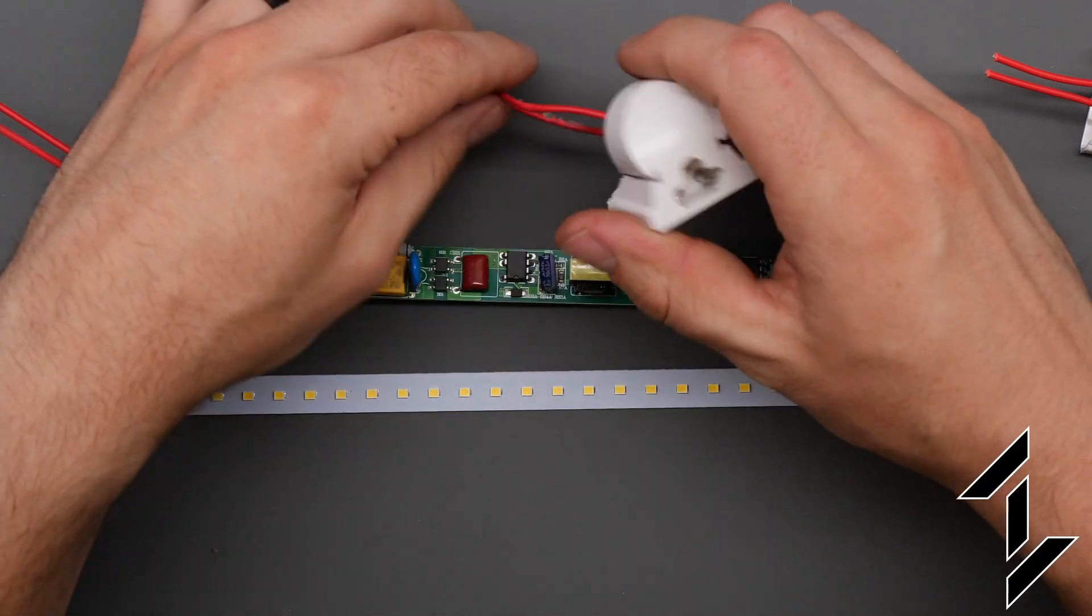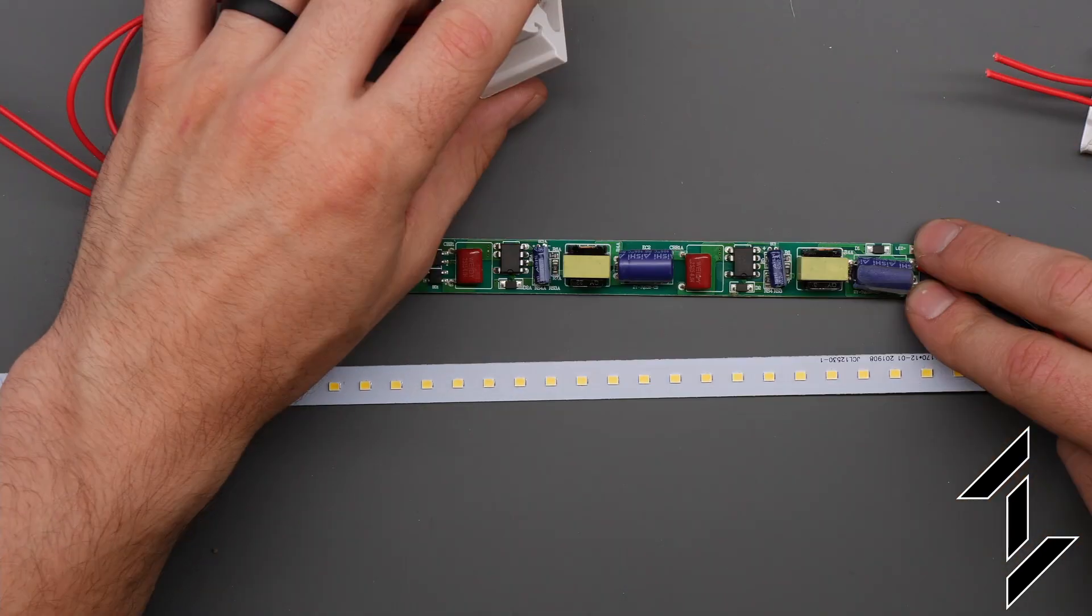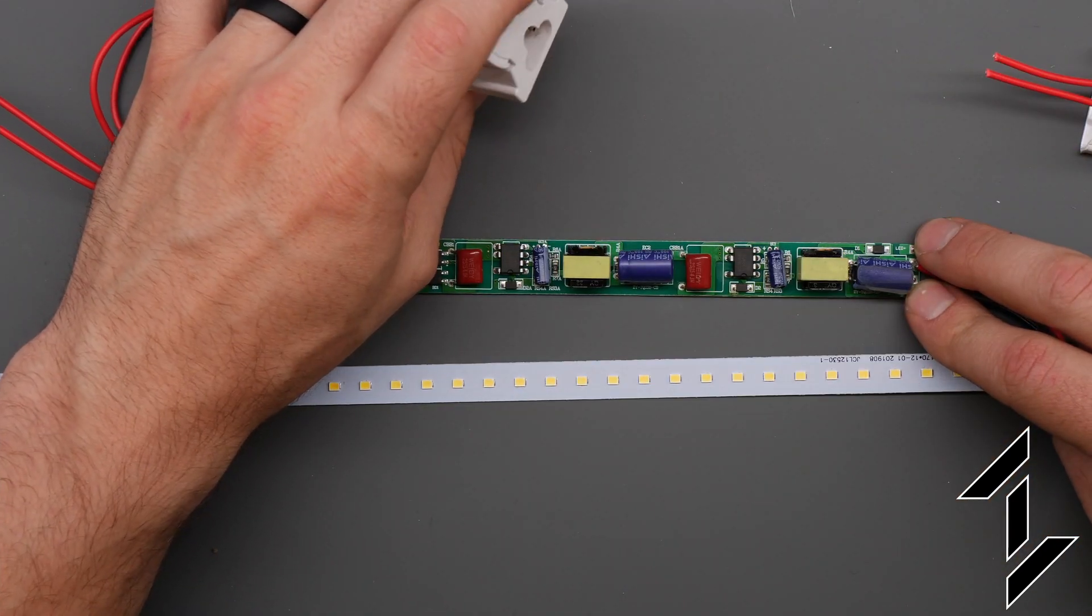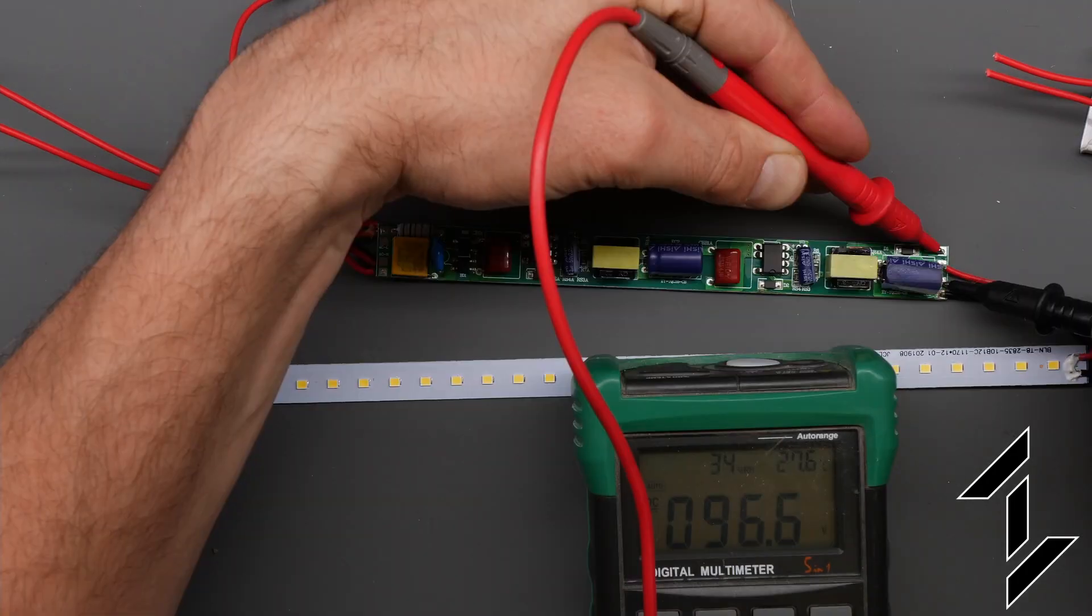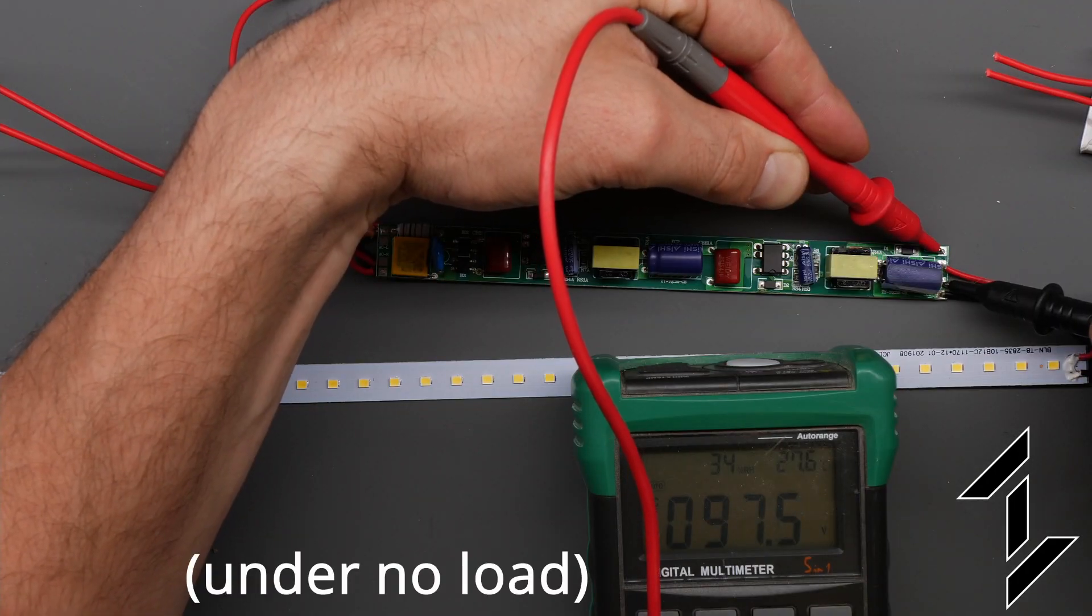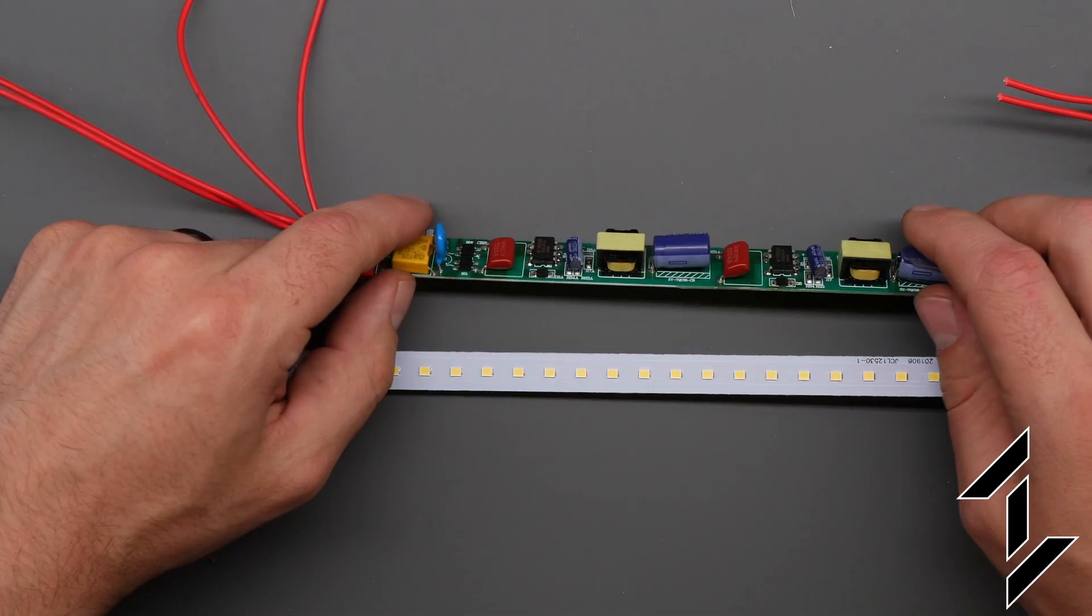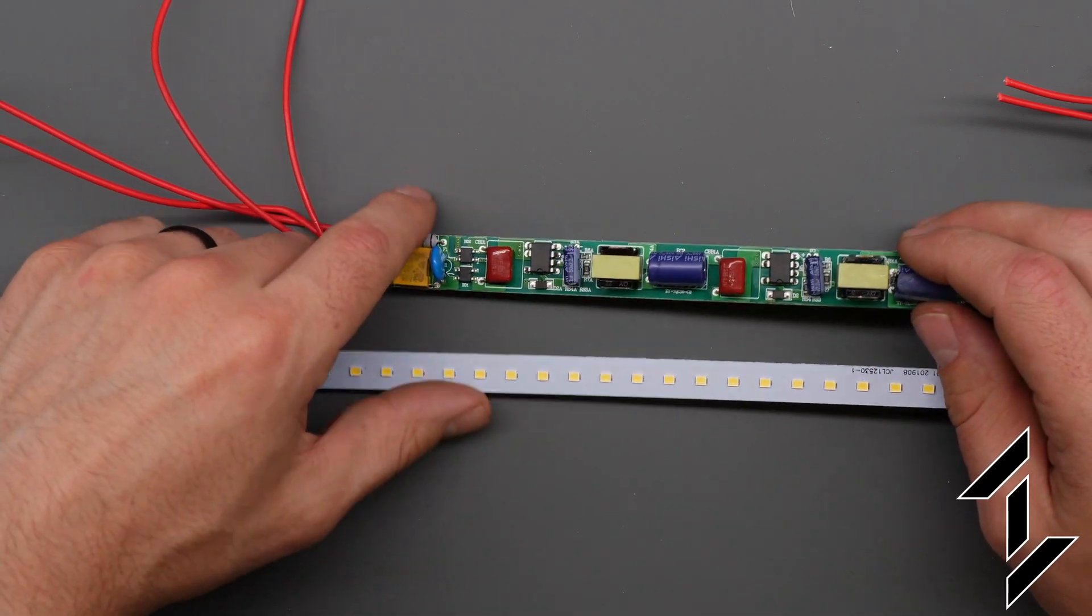Now let's very carefully put some line AC power on this and measure the DC output to have a better idea of what we're dealing with. It looks like we're around 98 volts DC on the output. Since everything there seems okay let's take a look at the LED strip.